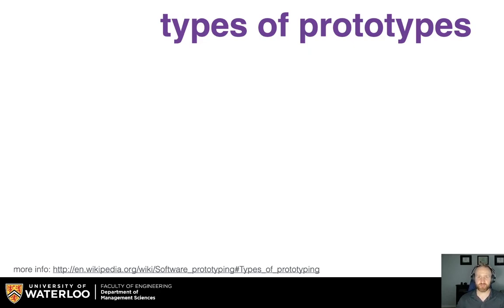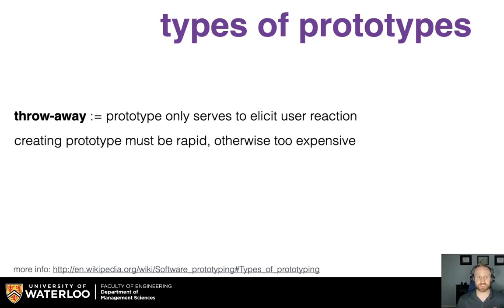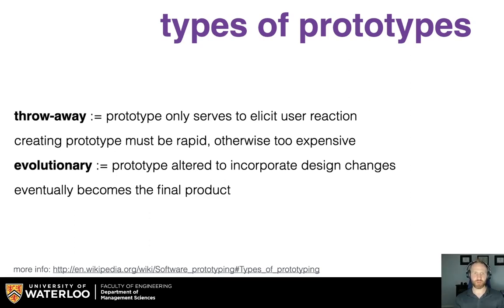There are different ways you might structure your prototypes. One type is throwaway — a prototype that only serves to elicit user reaction, and then that's it. Creating it must be rapid; otherwise it's too expensive. If you build a full system, test it, and then throw it away, that might not be the best use of your time. Or it might be evolutionary — a prototype that's altered to incorporate design changes and eventually becomes the final product, starting as a medium-fidelity prototype that gets refined into the final software.